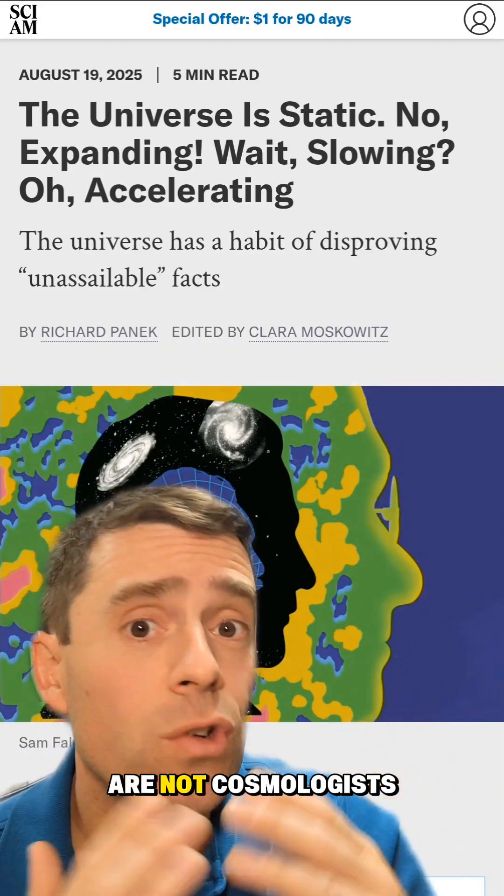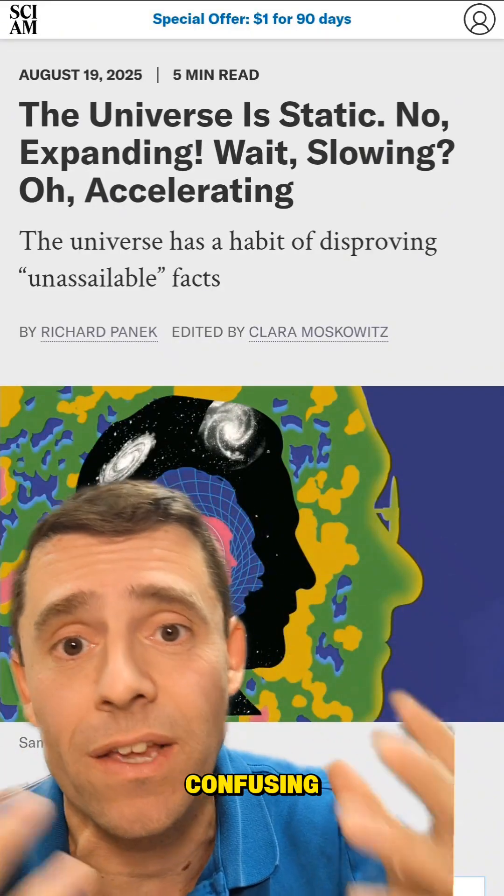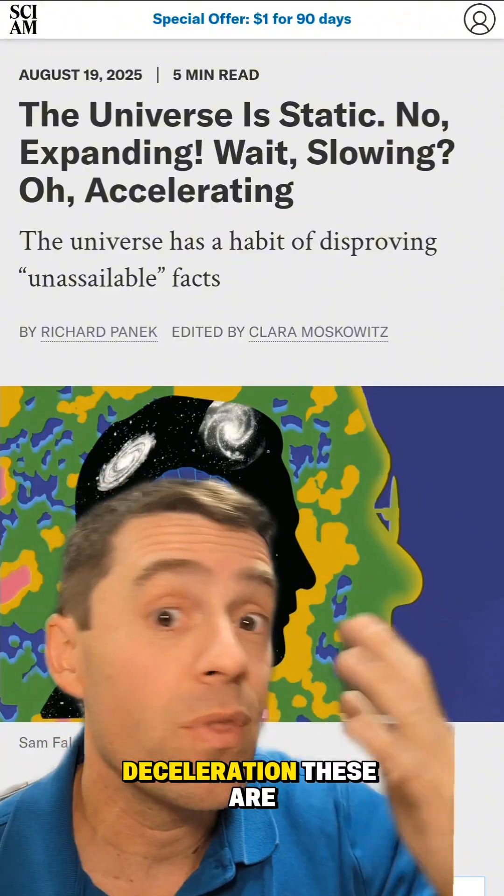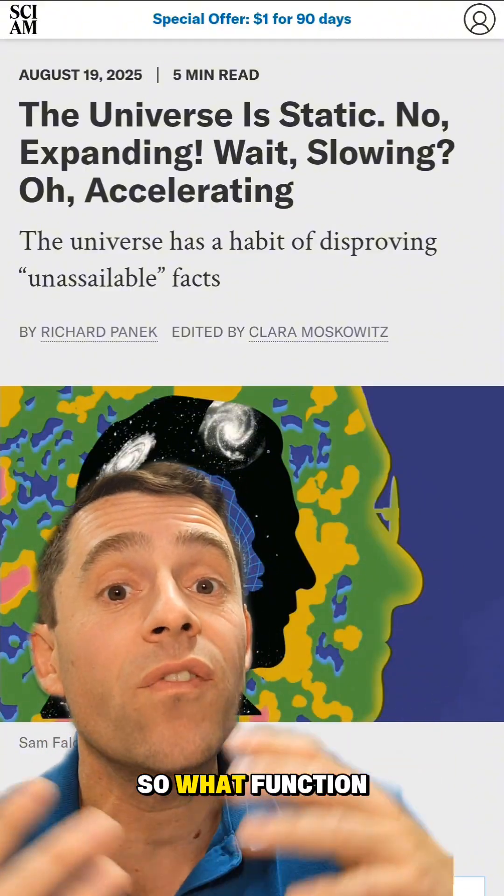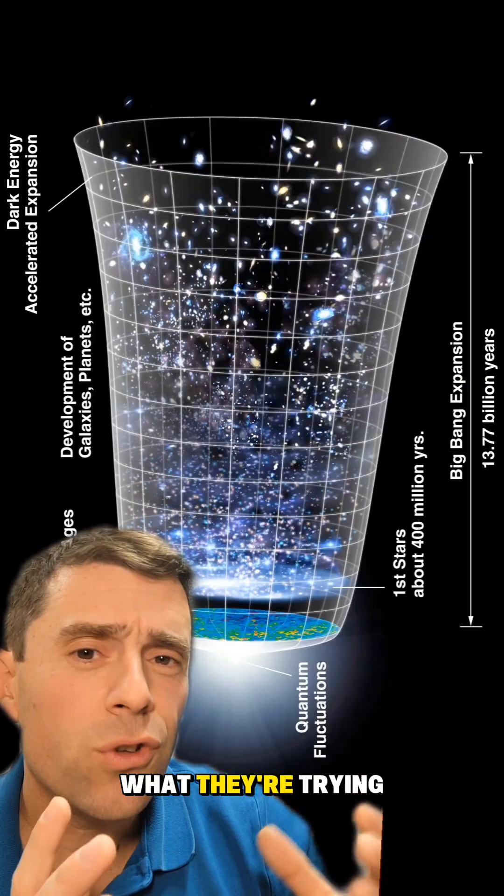But for all of us that are not cosmologists, their terminology is a little bit confusing. This expansion, slowing down, acceleration, deceleration—these are derivatives. So what function are they talking about? And what is the graph of that function?